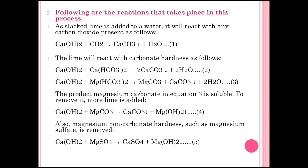The product magnesium carbonate (from equation 3) is soluble, so to remove it more lime is added. When magnesium carbonate remains in water, excess lime (calcium hydroxide) is added so it reacts with magnesium carbonate, giving calcium carbonate precipitate with removal of magnesium hydroxide precipitate. By using the maximum amount of lime we can remove magnesium carbonate type of impurity.